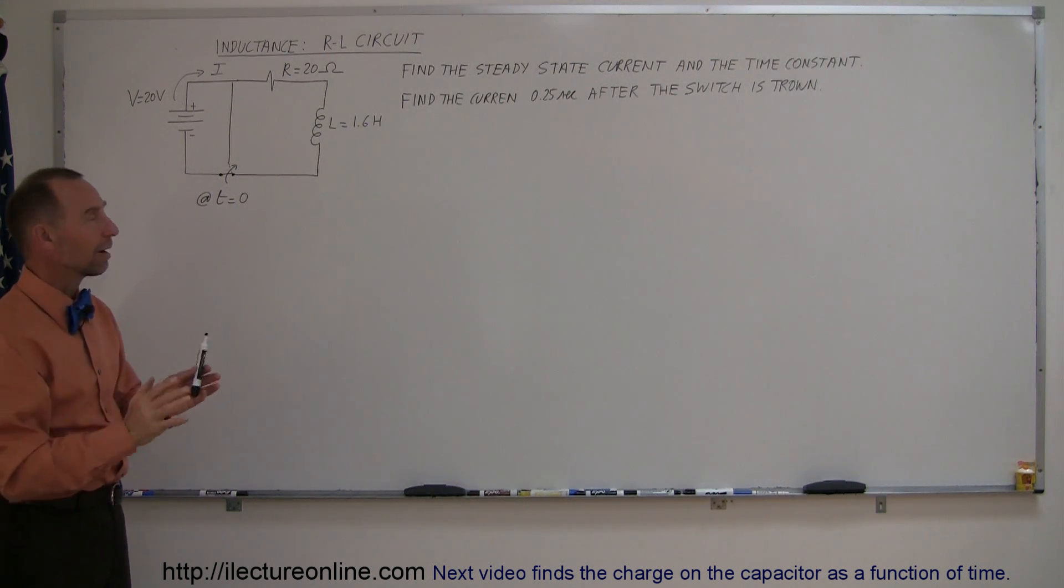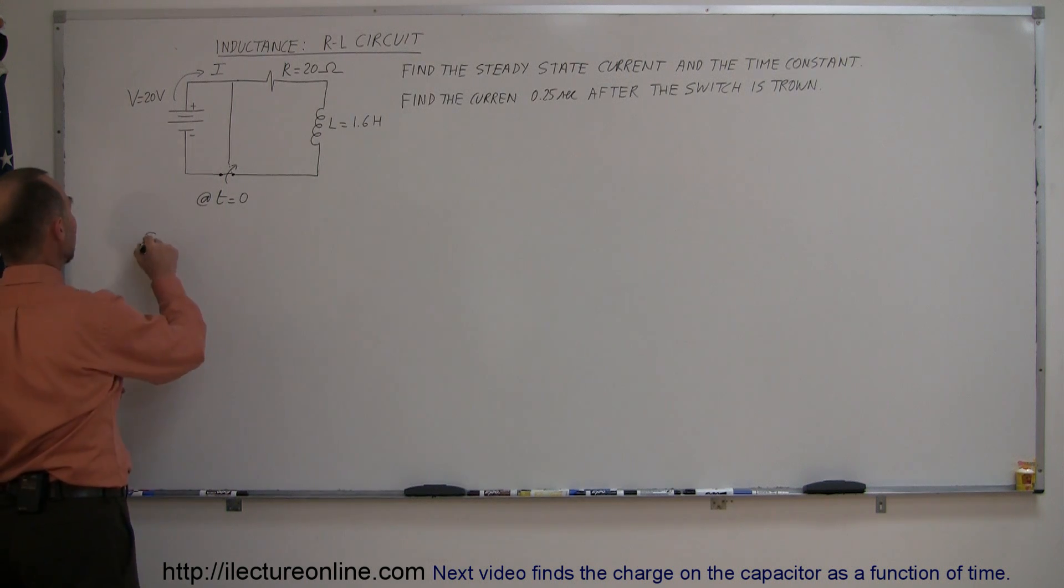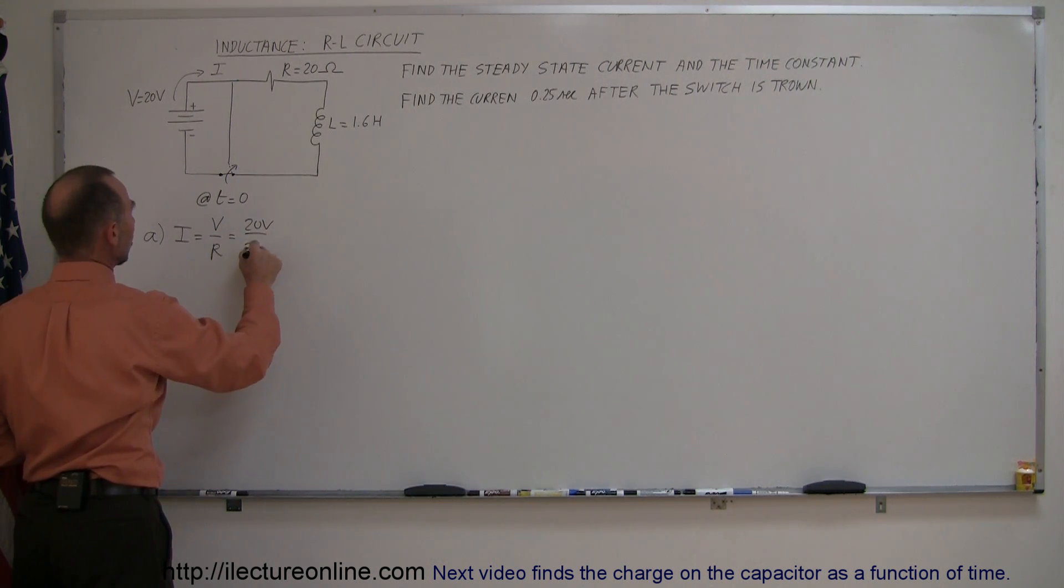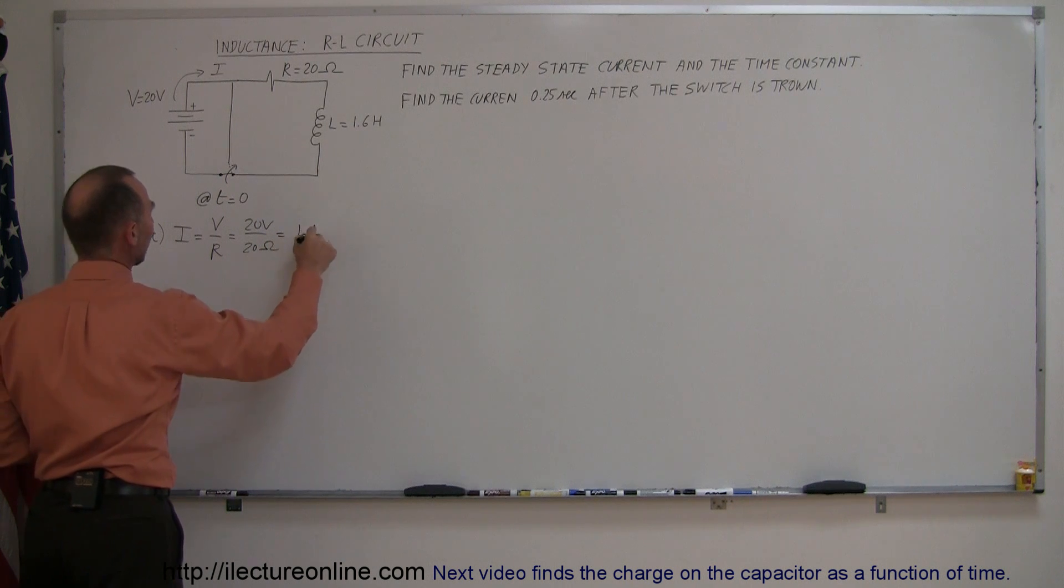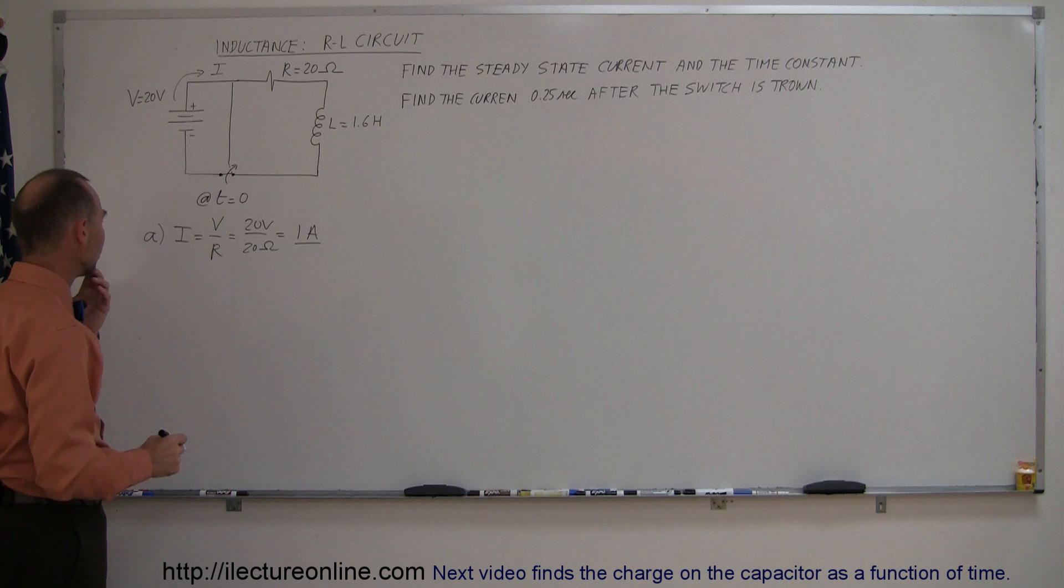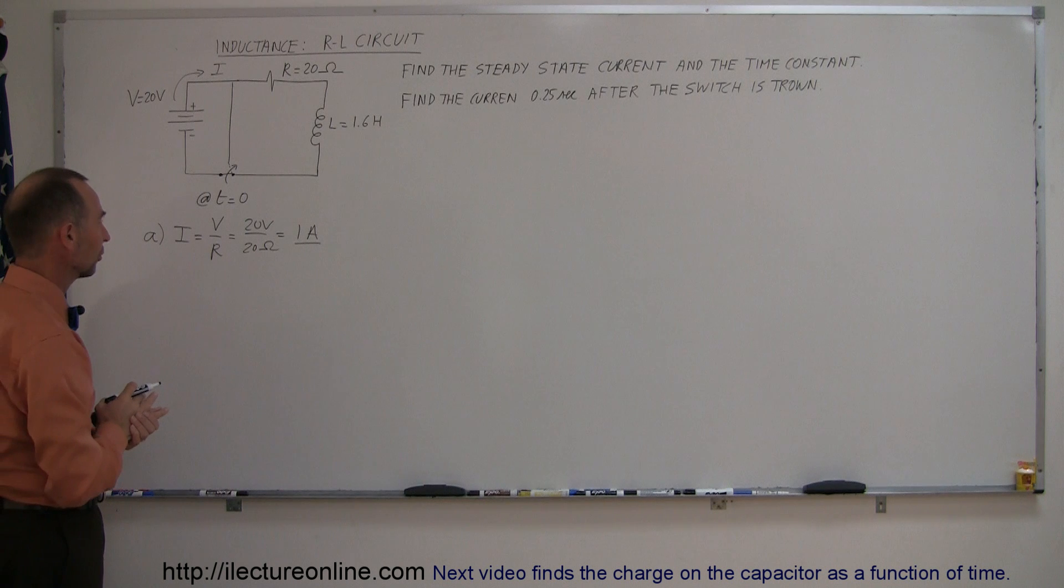After long steady state and the current is flowing, the inductor offers no opposition to the current. So in this case for part A, I steady state is simply equal to the voltage divided by the resistance in the circuit, which is 20 volts divided by 20 ohms which is equal to 1 amp. Initially at the steady state condition we have only the resistor and the battery to worry about, which using Ohm's law tells us that the current is 1 amp.